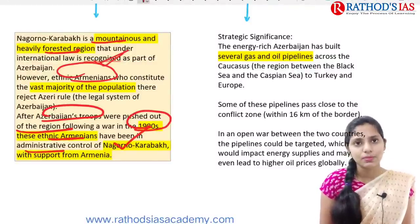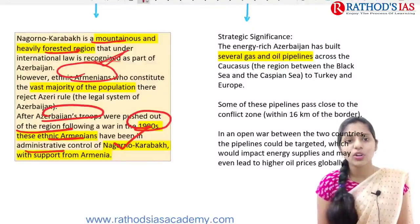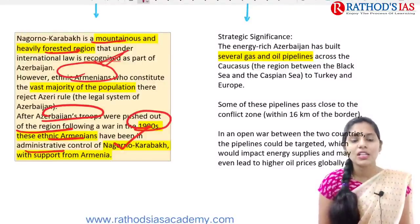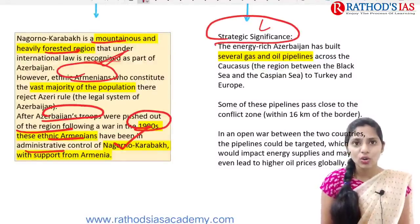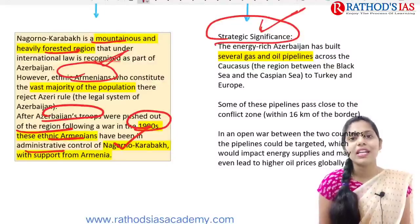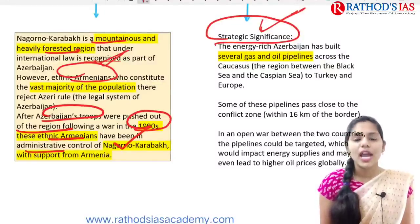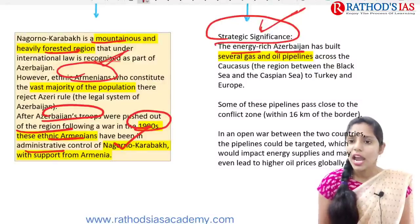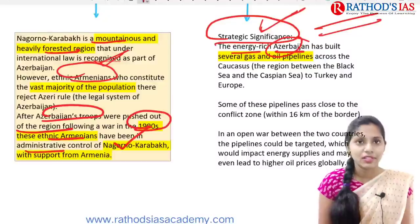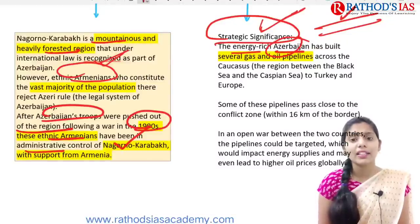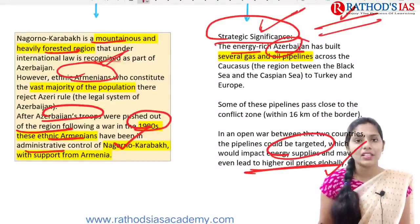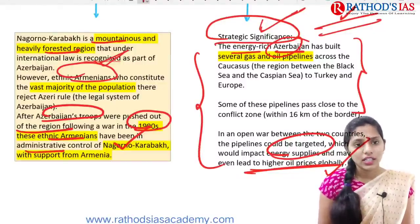International law says it belongs to Azerbaijan, but the population in this region are Armenians who pushed out Azerbaijan's troops and came up with administrative control, supporting Armenia. Regarding the strategic significance of the Nagorno-Karabakh region, Azerbaijan is energy-rich and has built gas and oil pipelines that mainly pass through this region. If there is any issue, those pipelines will be targeted. Whenever these pipelines are targeted, that will impact energy supplies and lead to higher oil prices globally.